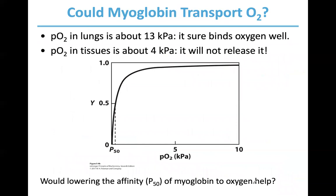Could myoglobin transport oxygen? The answer is no. Myoglobin has very strong affinity for oxygen. Remember P50 — the partial pressure of oxygen at which 50% of all sites on myoglobin are occupied — it's a very small number, around 0.28 kPa. The critical numbers on this graph are 4 and 13 kilopascals.